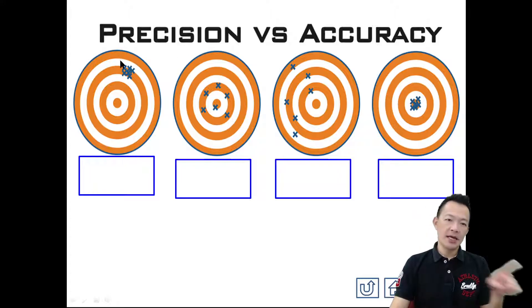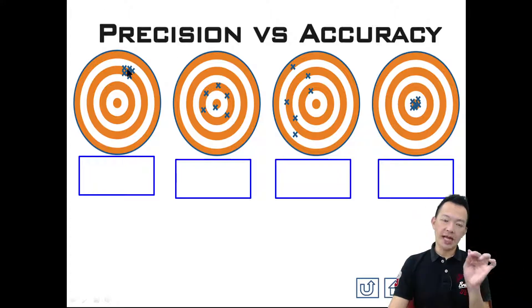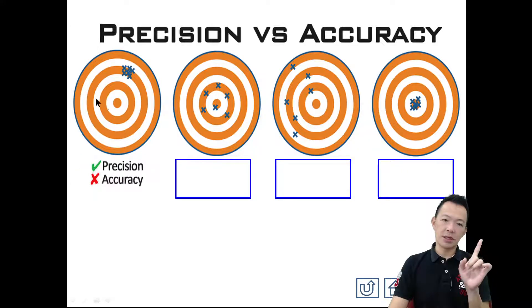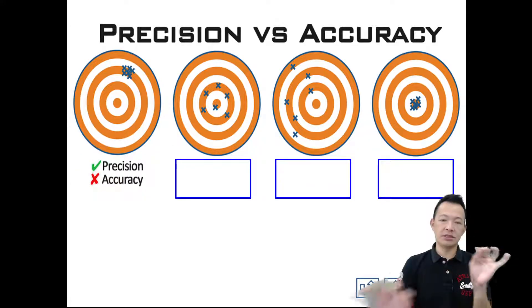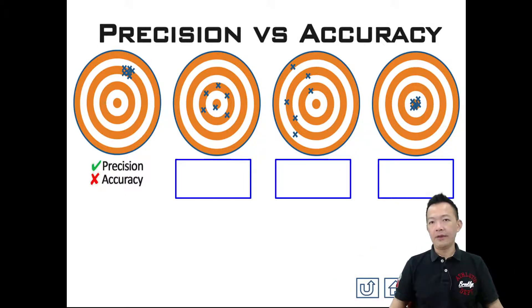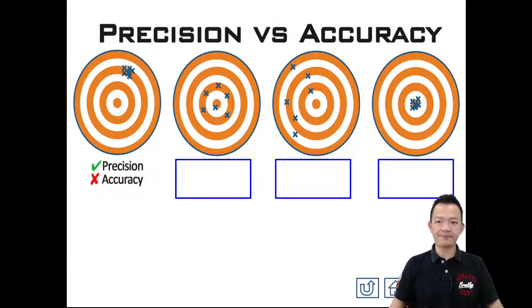For example: is it accurate? No. Precise? Yes. So: precision — yes; accuracy — no. That's how you do it. Go ahead and complete it all the way. If all answers are correct, that means you understand. Start now.